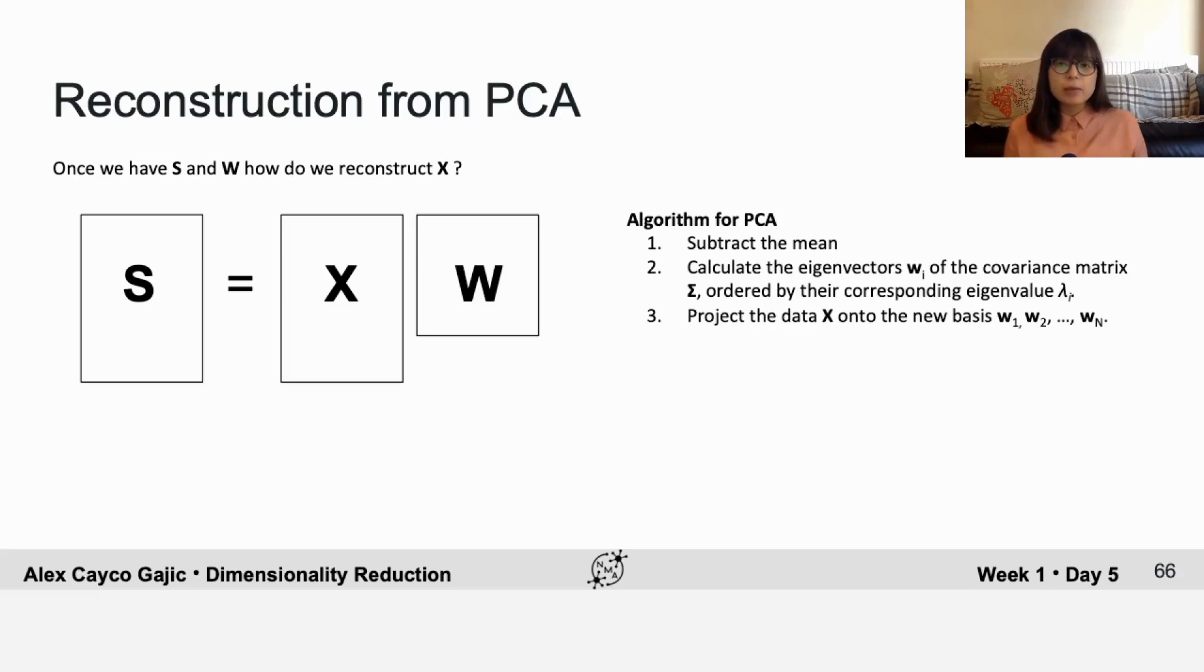So far you've learned that PCA represents your data in a new orthonormal basis that you can find from the eigenvectors of the covariance matrix. That means that once we have the scores and the weights, we should be able to reconstruct x by projecting back into the standard basis.